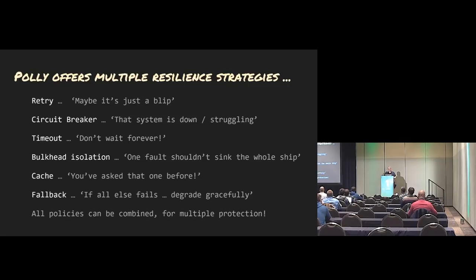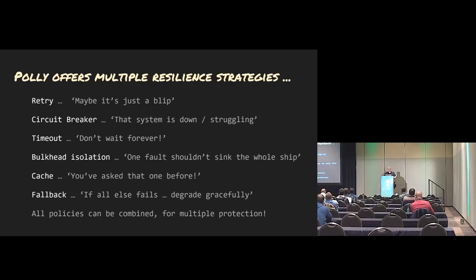The resilient strategies are: retry — maybe this is just a blip, maybe a short outage that will resolve itself in a few seconds, so we'll just retry. And the circuit breaker is the pattern you use to avoid the Lucy-Ethel situation where the system is struggling — I'm going to stop flooding it with retries to take the pressure off that service. A timeout — obviously a good thing to have — and you can combine all these things.